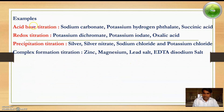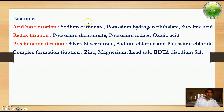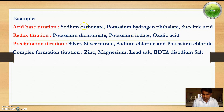These are some examples of primary standard solutions used in volumetric analysis. For acid-base titration, sodium carbonate, potassium hydrogen phthalate, and succinic acid are commonly used as primary standards for determining the unknown strength of other substances. For redox titration, that is oxidation-reduction titration, potassium dichromate, potassium iodate, and oxalic acid are mainly used as primary standards.